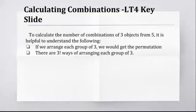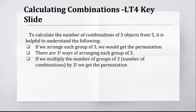If you multiply the number of groups of three, that's the number of combinations, by 3!. So in other words, you arrange each group of three, you get the permutation. Read through those three things very carefully. If you arrange the number of groups, if you arrange every one of those groups, and that's 3! ways, we get the permutation.